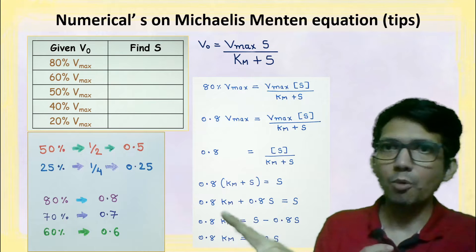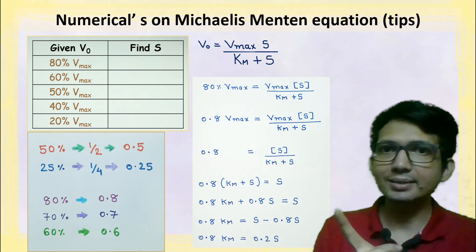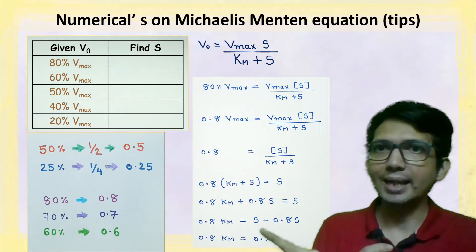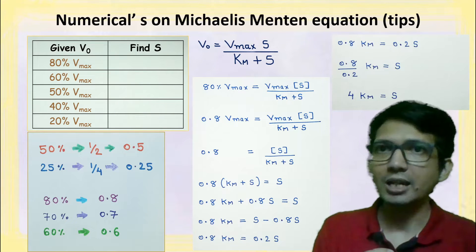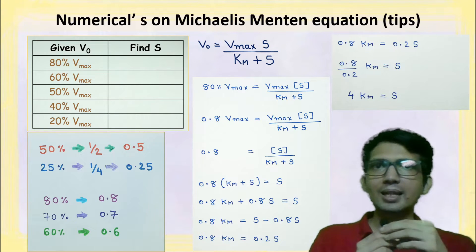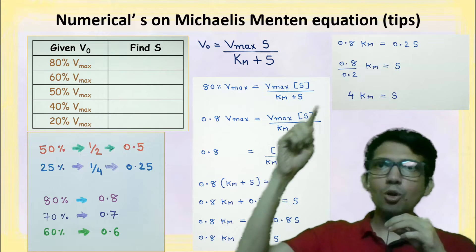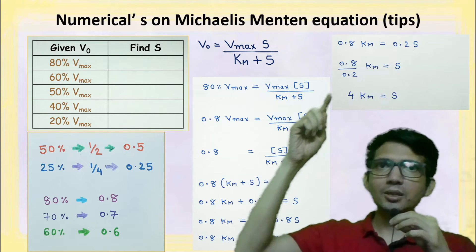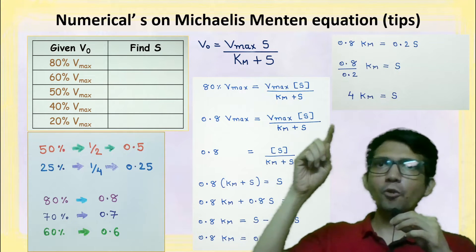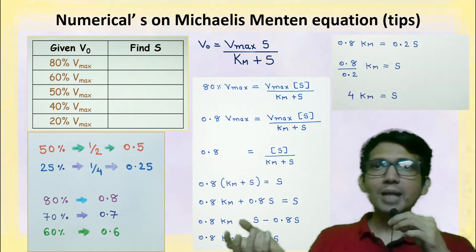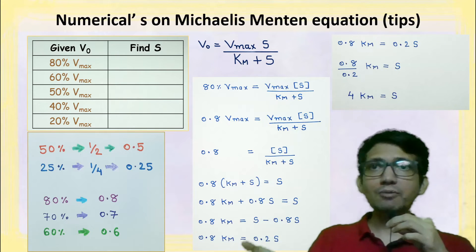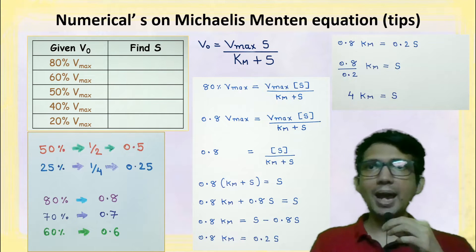Taking 0.8 to the right-hand side, it gets subtracted from s, giving us 0.2s. Solving the ratio 0.8 divided by 0.2 gives us 4. So if the substrate concentration is 4 times the value of km, then the velocity will be 80 percent of vmax.